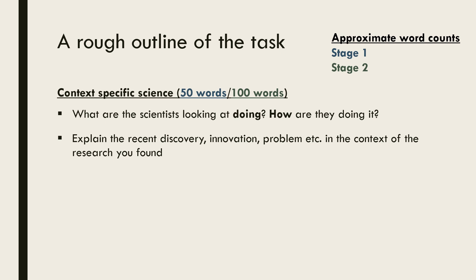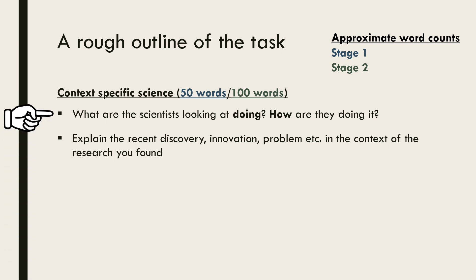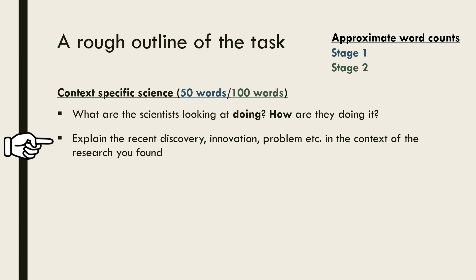Once you've provided some more general background information, give some more context-specific science. What are the scientists looking at doing? How are they doing it? Briefly explain the recent discovery or problem before discussing how it illustrates the interaction between science and society.